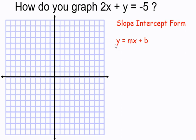In other words, I need to get this y by itself. For this equation to get the y by itself, I can subtract 2x on both sides of the equation. Remember, if I do it on both sides of the equation, the equation remains equivalent.